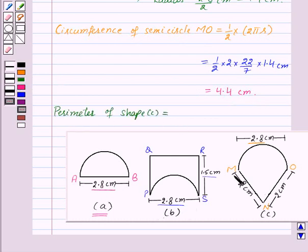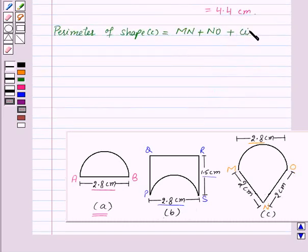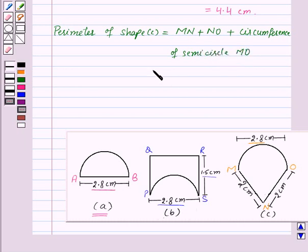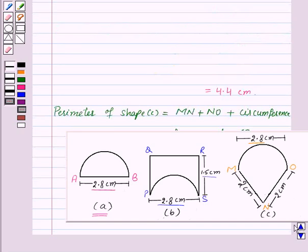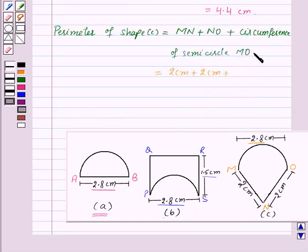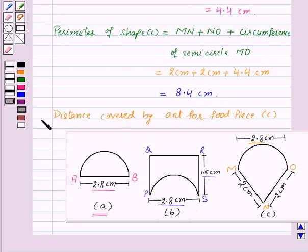So perimeter of shape C is equal to MN plus NO plus circumference of semicircle MO. That is MN equals 2 centimeters, plus NO also equals 2 centimeters, plus circumference of semicircle MO equals 4.4 centimeters. So this is equal to 8.4 centimeters. Therefore, the distance covered by the ant for food piece C is equal to 8.4 centimeters.